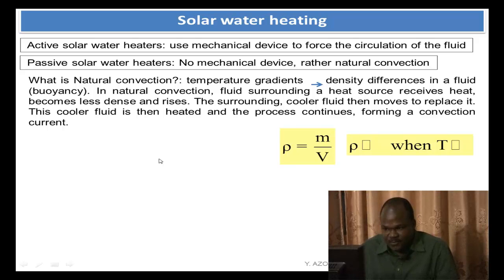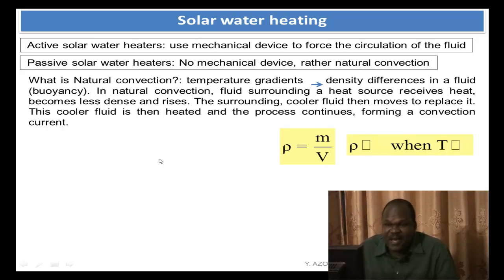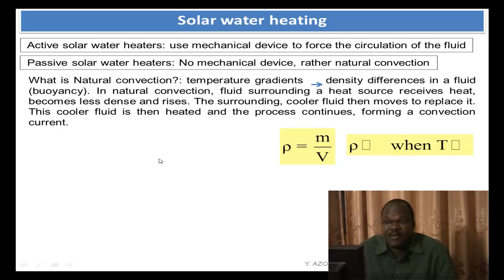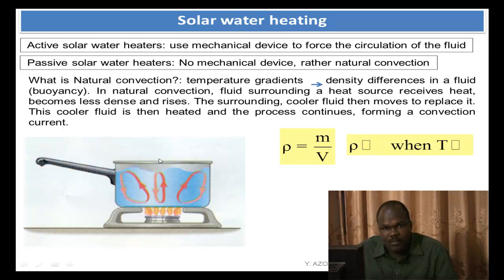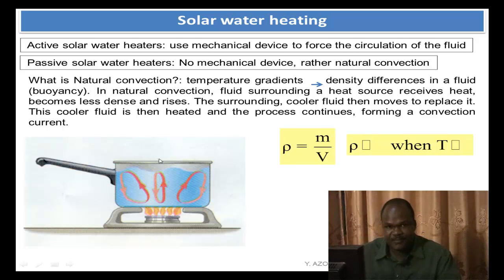Solar water heating. Basically, you have two types of solar water heating. You have the active solar water heaters that use a mechanical device to force the circulation of the fluid. And you have the passive solar water heaters — there is no mechanical device, it's just natural convection. Natural convection is caused by difference in density, and the difference in density is caused by a temperature gradient. Let's look at the example here.